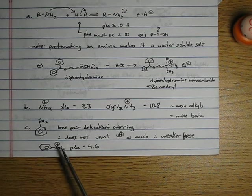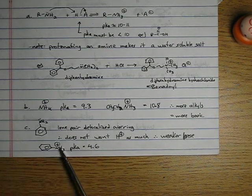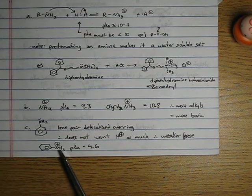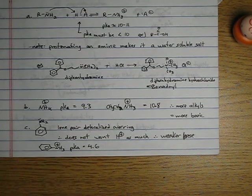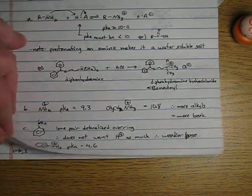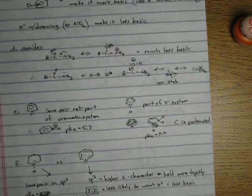Which means a protonated aniline actually has a pKa of 4.6. It is a much stronger acid than regular NH4+, because it prefers to give up one of these protons so that it can have that lone pair that could delocalize into that ring.